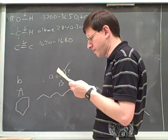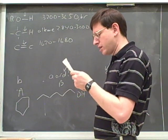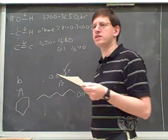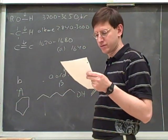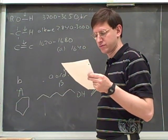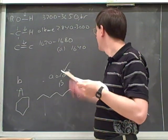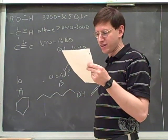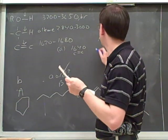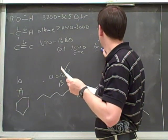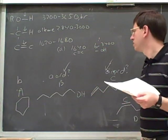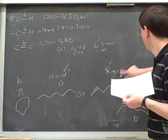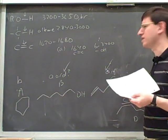So thinking through the logic: if you look at lowercase a, lowercase a has the 1640 — what is that diagnostic of? Lowercase a has a 1640, that seems to indicate an alkene. And lowercase a also has a broad 3400, which indicates an alcohol. So we can say that lowercase a has to be uppercase C, because we've got the alkene and the alcohol.